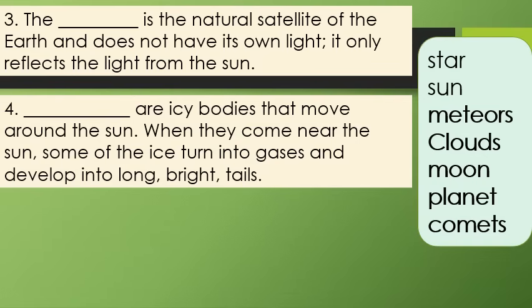Number 4. Blank or icy bodies move around the sun. When they come near the sun, some of the ice turn into gases and develop into long bright tails.